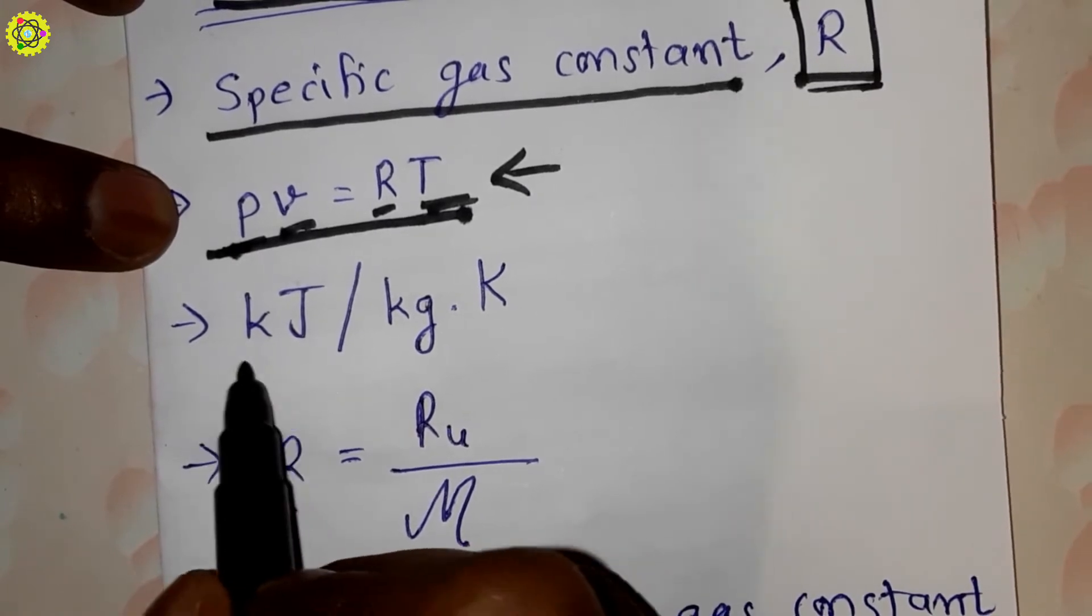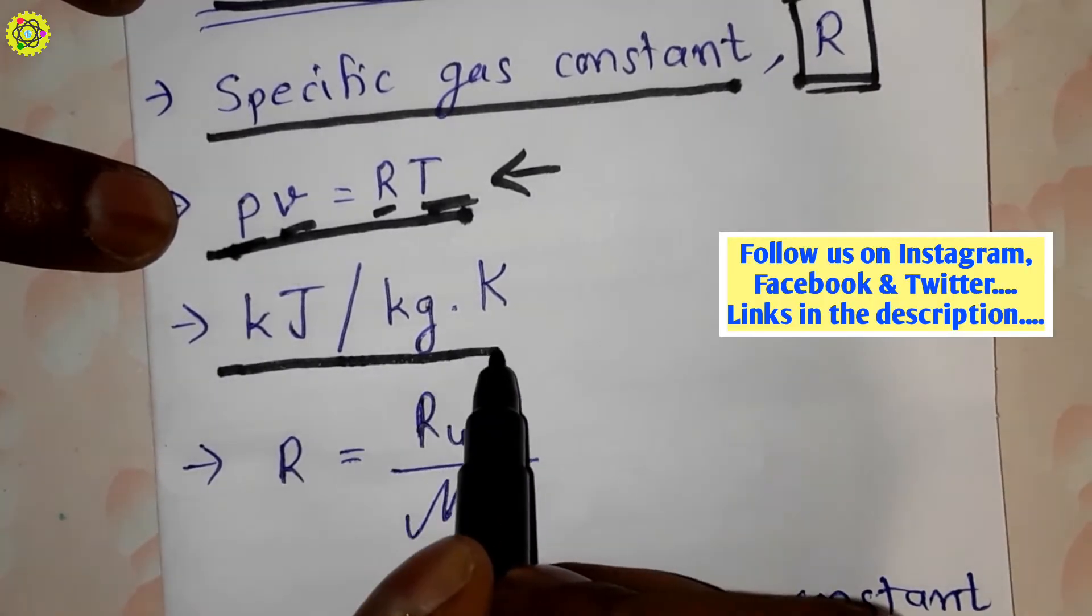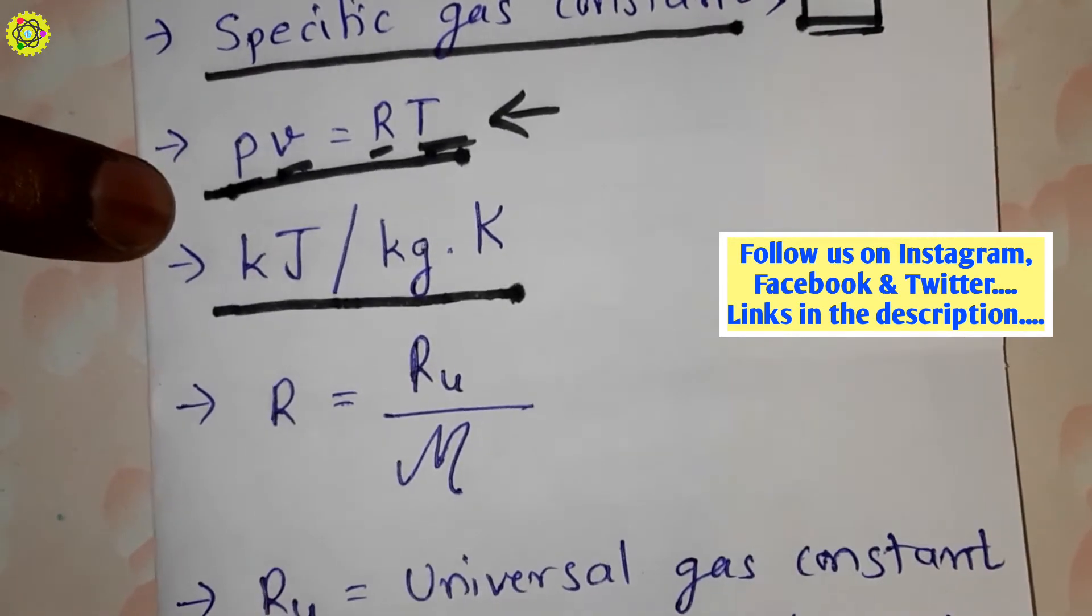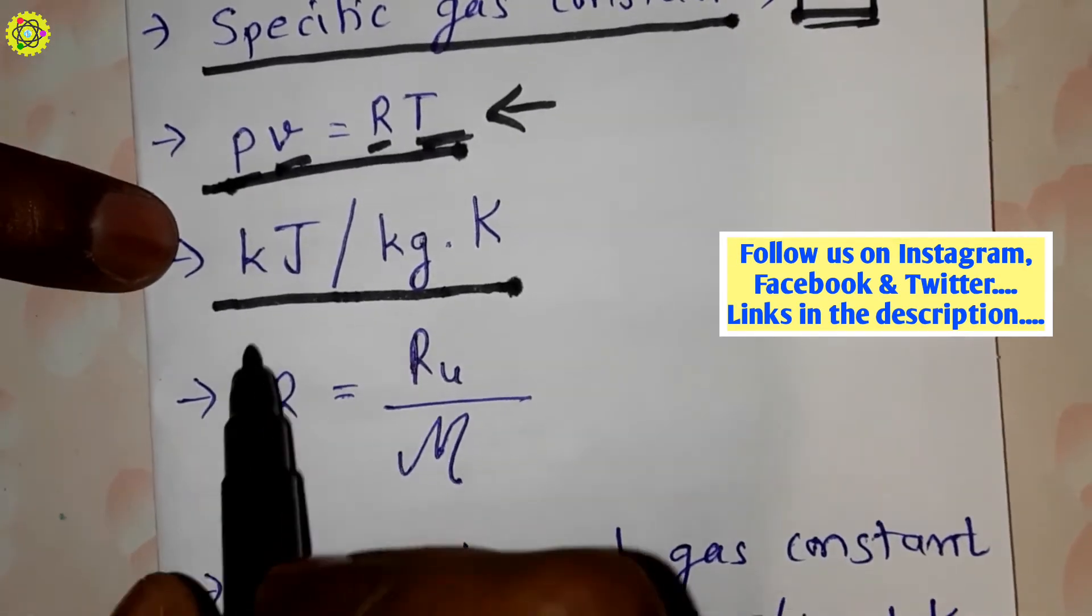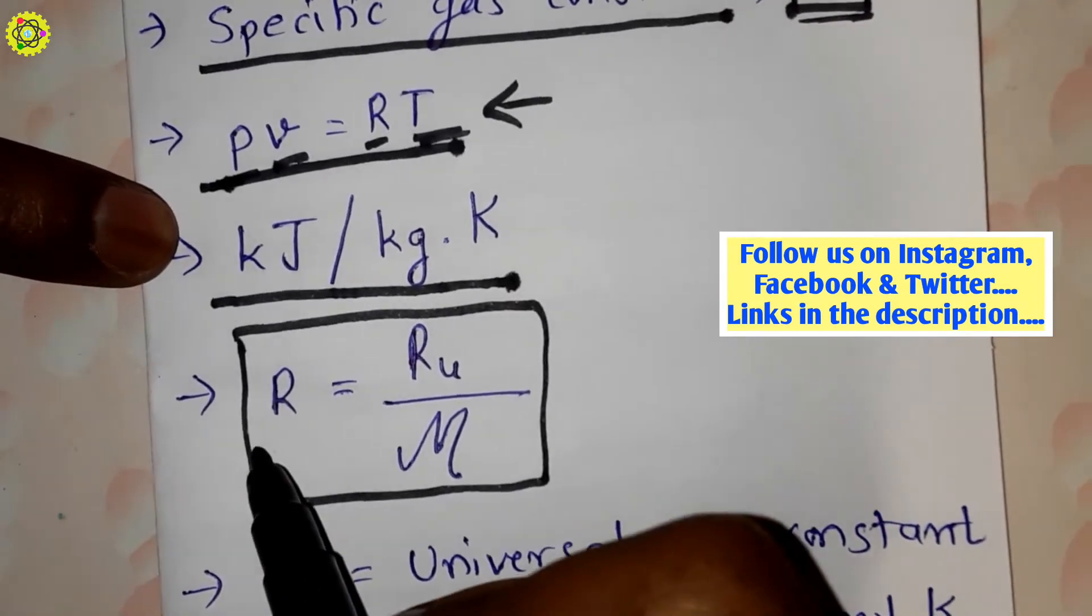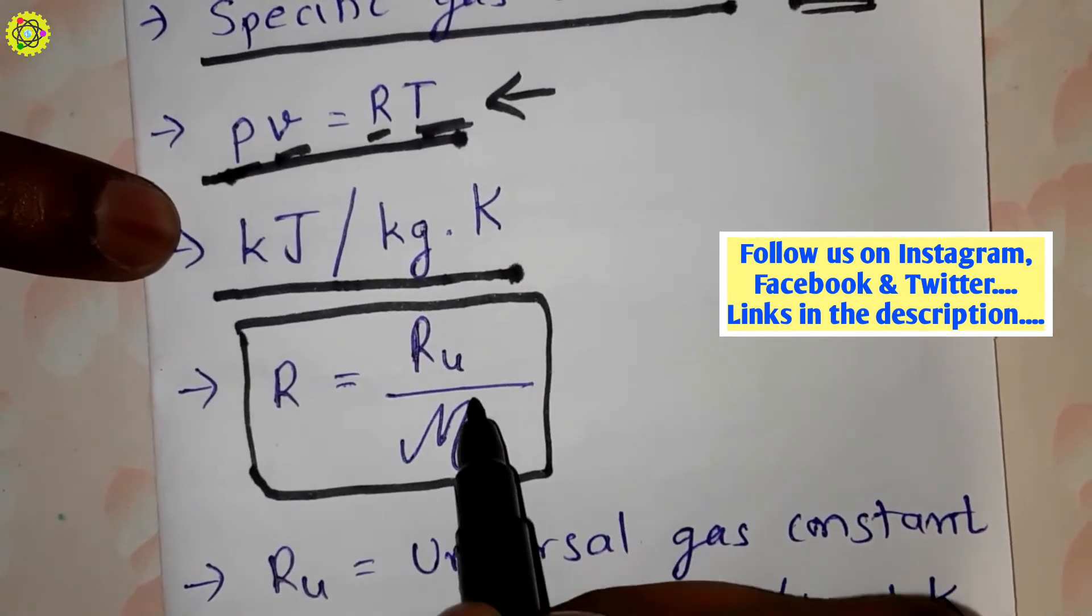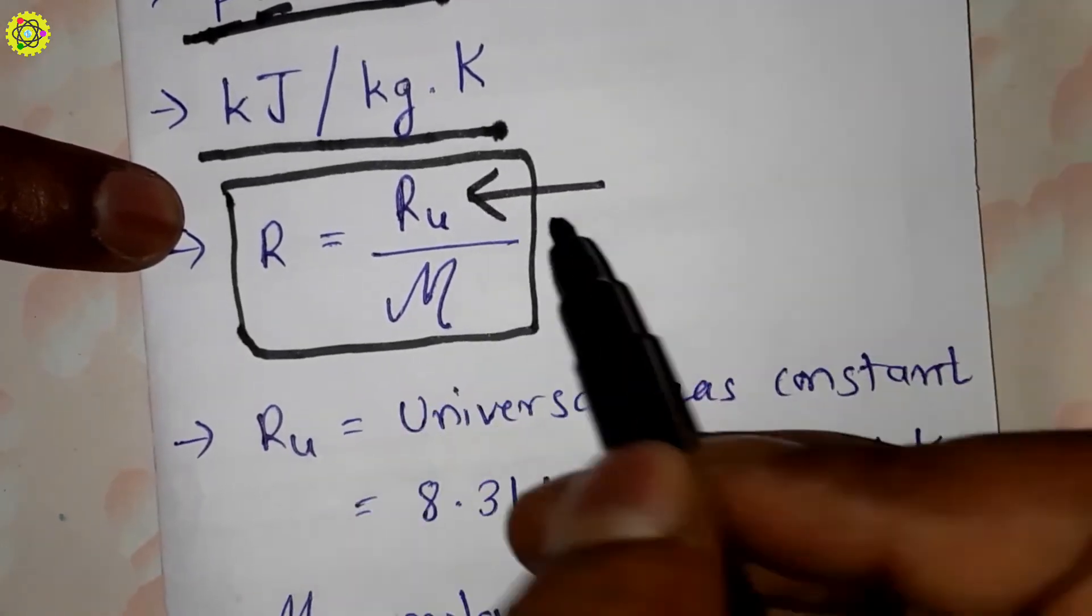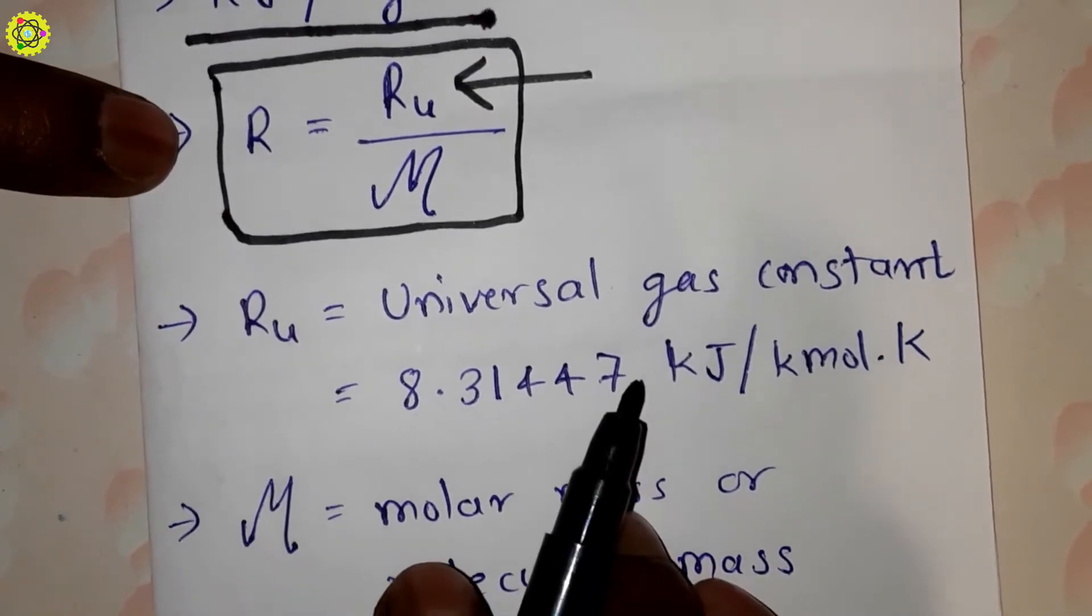units called kilojoule per kg kelvin (kJ/kg·K). And this specific gas constant we can obtain by this equation: R equals Ru upon molecular mass. Here, Ru is the universal gas constant